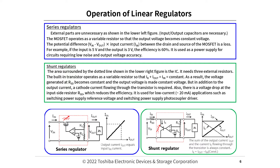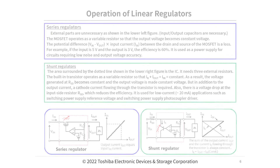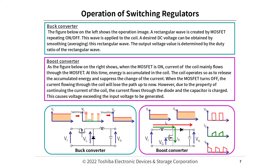For shunt regulators, the area surrounded by the dotted line shown in the lower right figure is the IC, and it needs three external resistors. The built-in transistor operates as a variable resistor so that IK plus Iout equals Iin, keeping it constant. As a result, the voltage generated at RSD becomes constant and the output voltage is made constant. In addition to the output current, a cathode current flowing through the transistor is required, and there is a voltage drop at the input side resistor RSD, which reduces efficiency. It is used for low current up to 20mA applications such as switching power supply reference voltage and photocoupler driver.